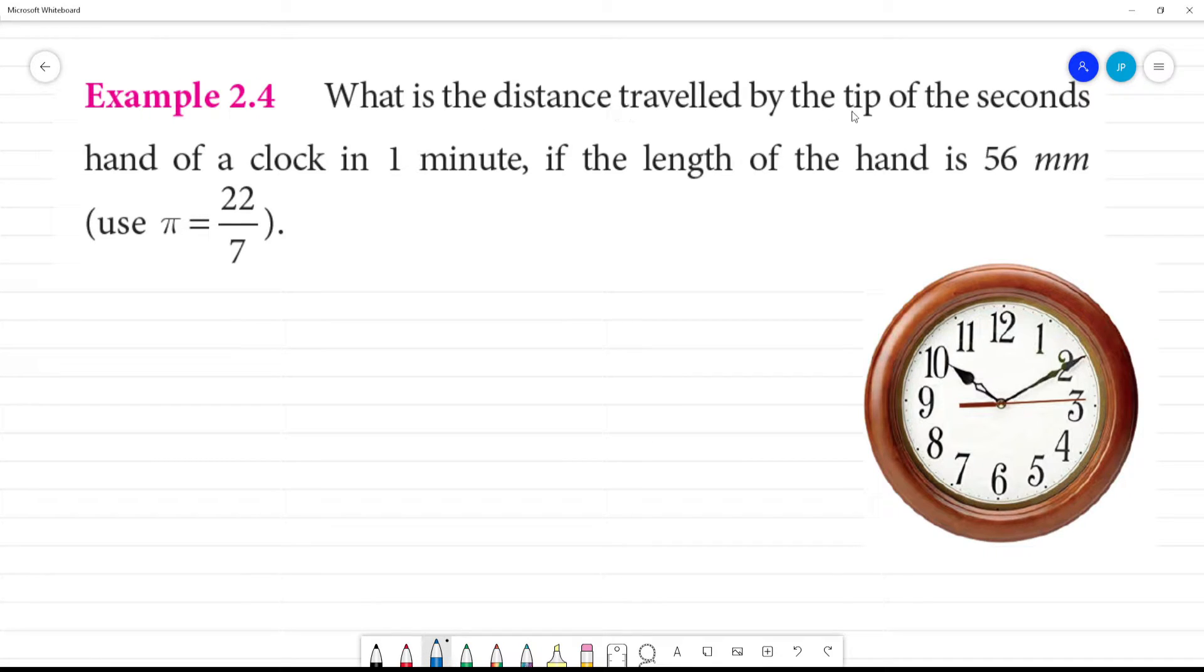What is the distance travelled by the tip of the seconds hand of a clock in one minute if the length of the hand is 56 millimeter? Okay, so let's look at what data we can see here.